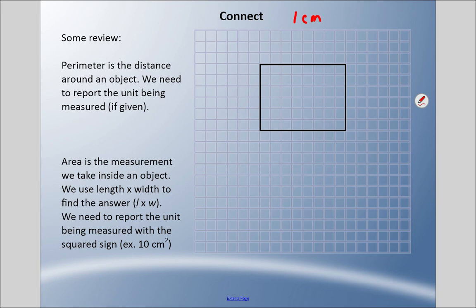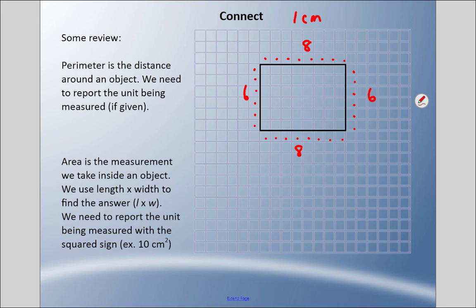I need to count around the object: one, two, three, four, five, six, seven, eight on this side; one, two, three, four, five, six on this side; eight again on the opposite side; and six on the last side. Something you should remember from your primary days: a rectangle has two sides the same and the other two sides the same. So eight plus eight is sixteen, six plus six is twelve, and that is a grand total of twenty-eight centimeters. You must put that unit.